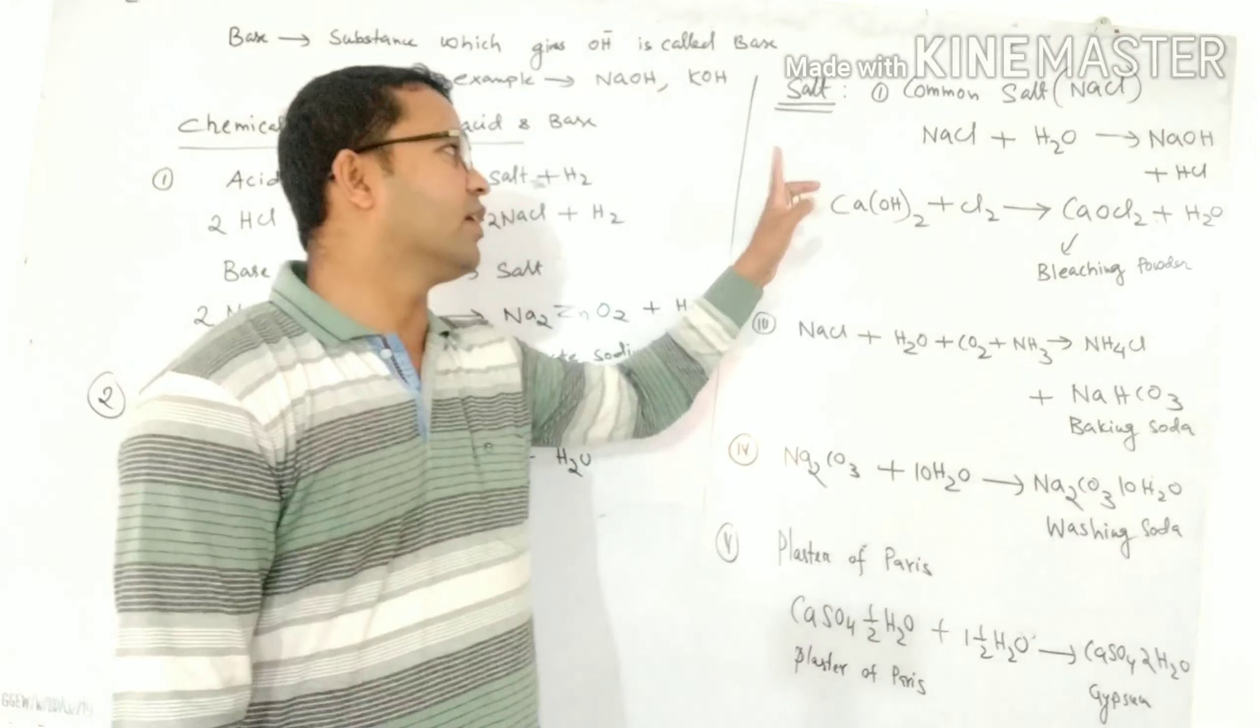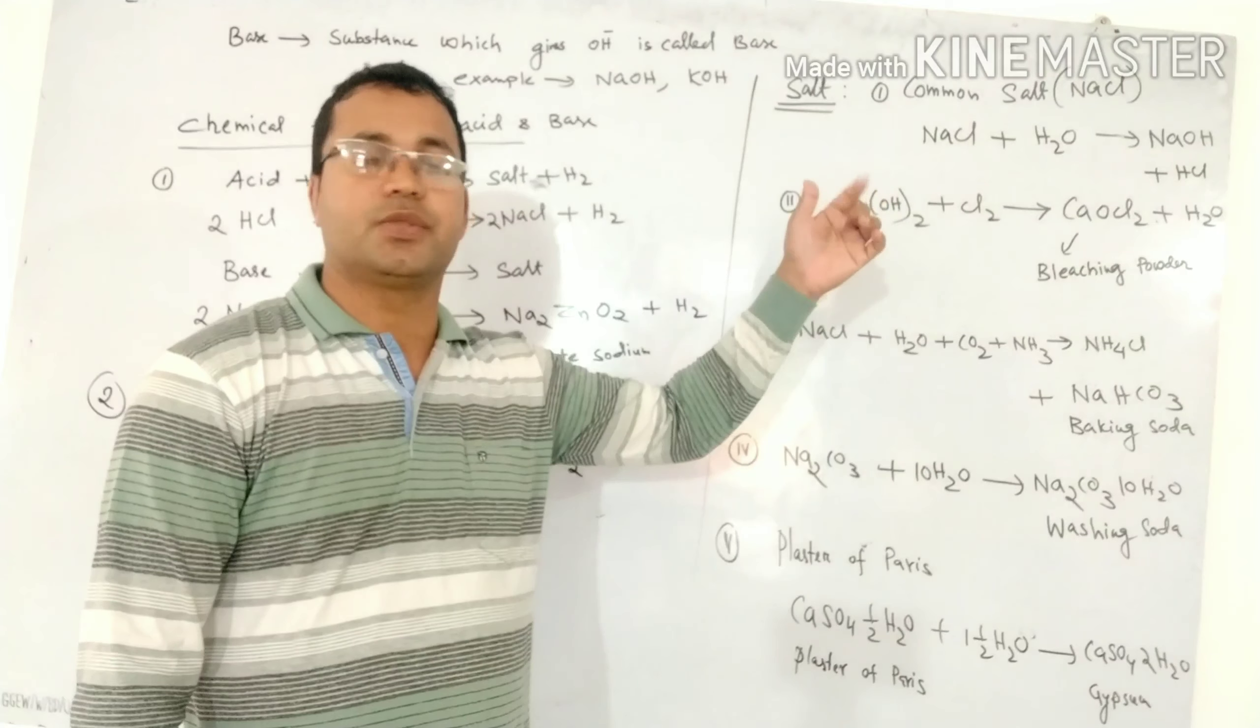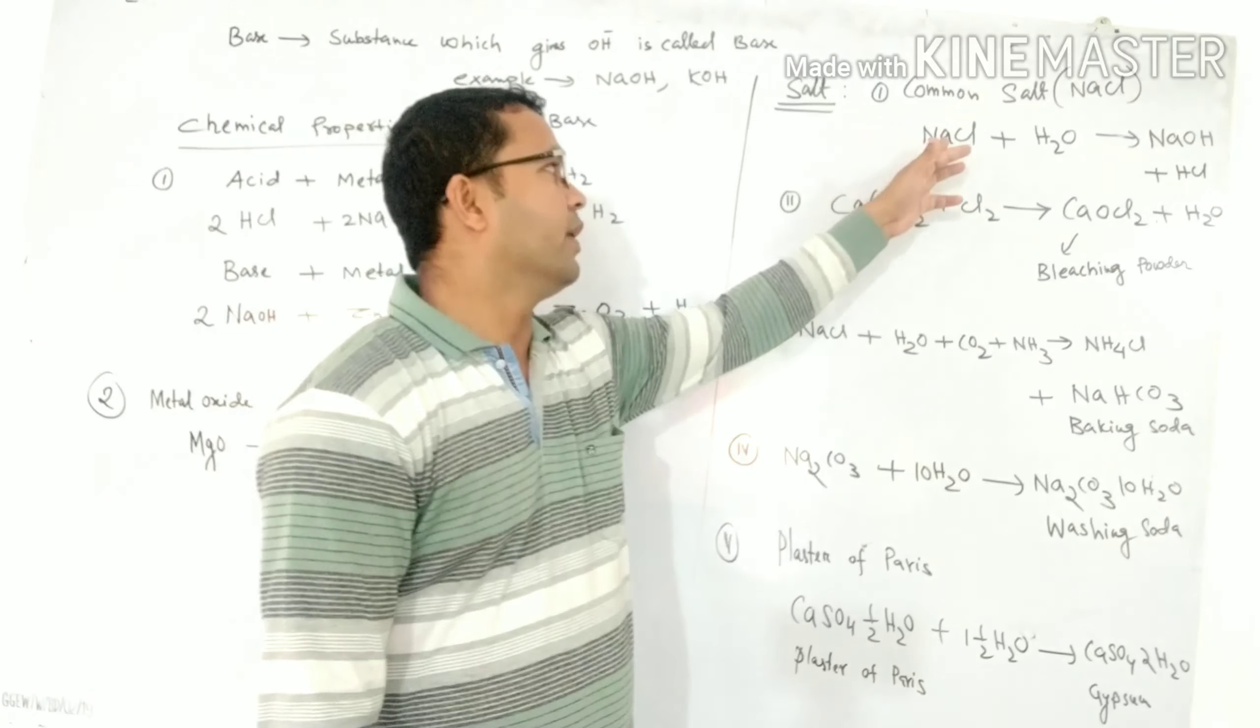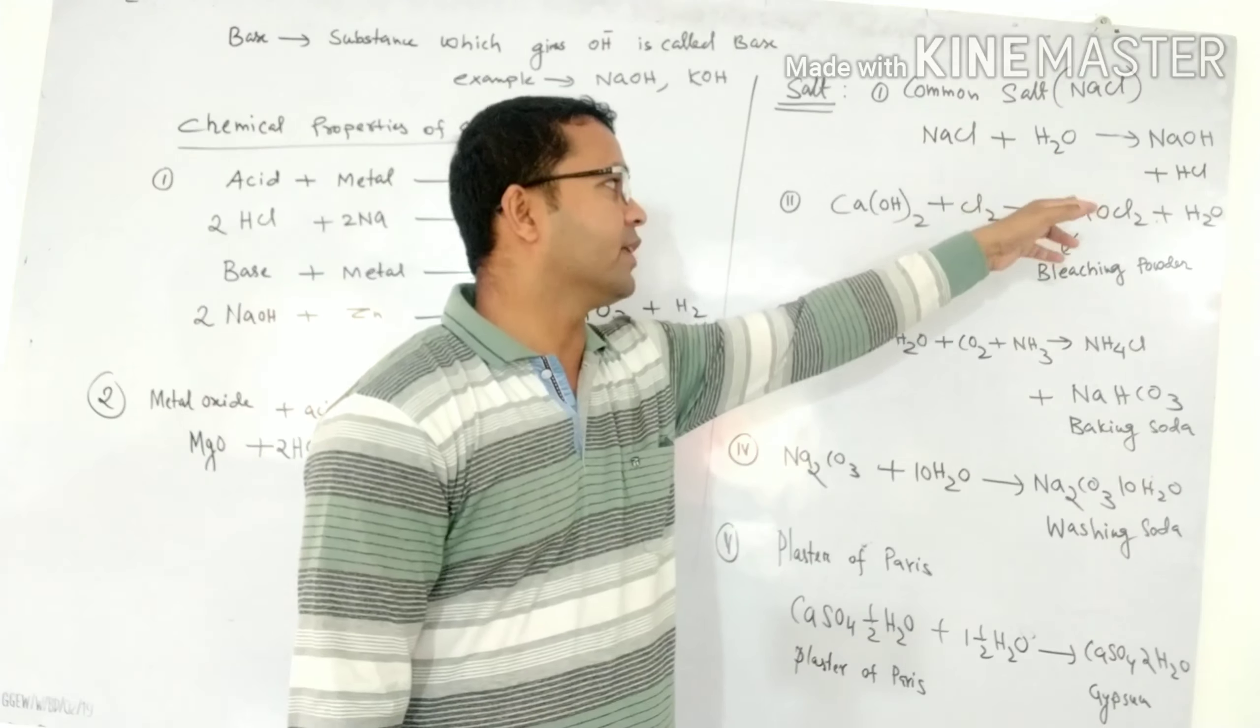For example, first one is common salt, that is NaCl, sodium chloride. When NaCl react with water we get sodium hydroxide and HCl. This reaction is a little bit important.